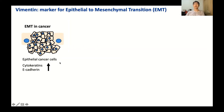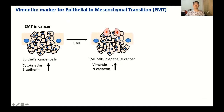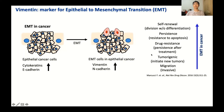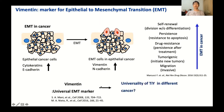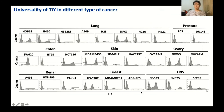Some mesenchymal-type cells have been found in aggressive epithelial cancer cells. Studies have demonstrated that epithelial cancer cells become mesenchymal-type cells through epithelial-mesenchymal transition, or EMT. This EMT is known to provide tumor-initiating ability to epithelial cancer cells, including drug resistance, tumorigenicity, and migration. Vimentin is known as a universal biomarker for EMT. So I expected that TiY could be applied to many different cancer cell types through Vimentin binding. I prepared cancer cell lines derived from lung, prostate, colon, skin, ovary, renal, breast, and CNS cancer for TIC enrichment using TiY.